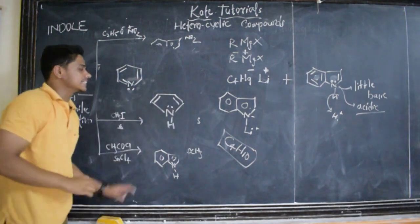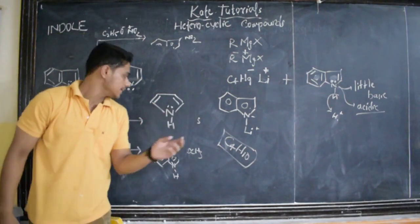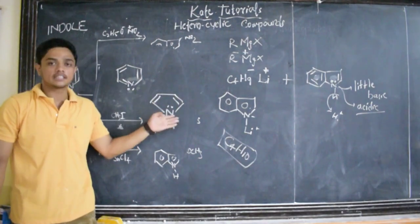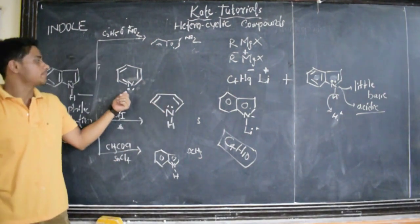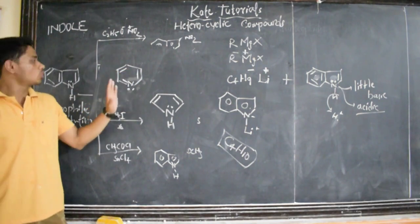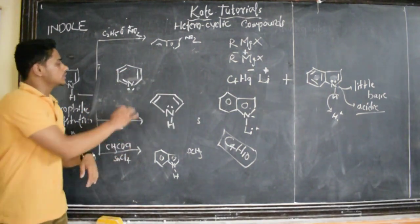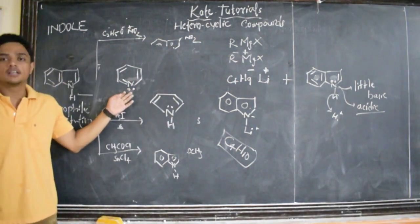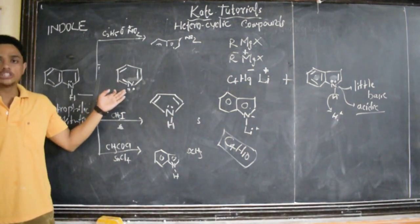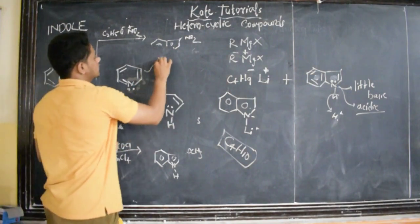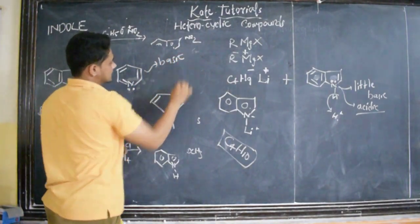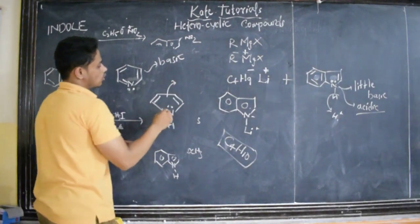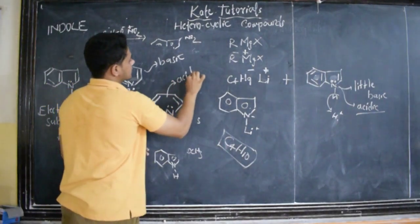In pyrrole, to get 6 pi electrons, to get aromaticity, these 2 pi electrons are involved in the resonance. Whereas in pyridine, since it is having 6 pi electrons, so no need of any extra electron. So these are outside the ring. These are not involved in any conjugation. So it is basic in nature. Whereas pyrrole is acidic in nature.